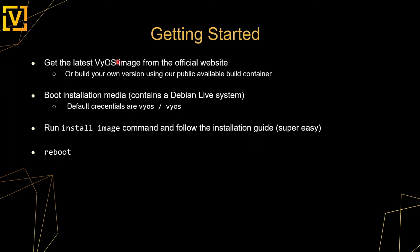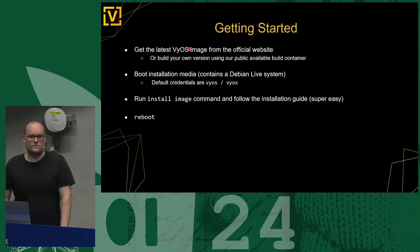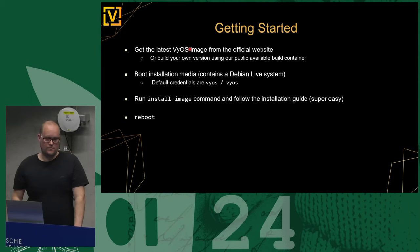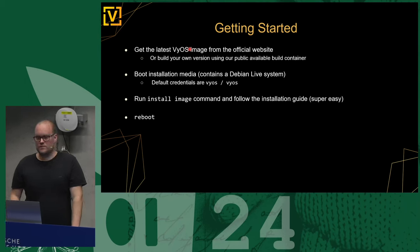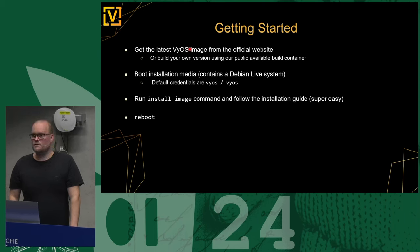To get started, you can get the latest rolling release from our website or build it yourself. Boot the installation ISO image — it's a Debian live system using default credentials 'vyos/vyos'. Run the install image command; it will format your hard disk, ask if you want to set up software RAID 1 if you have multiple devices, then you reboot into your fresh system. It also asks if you want to change the default credentials.